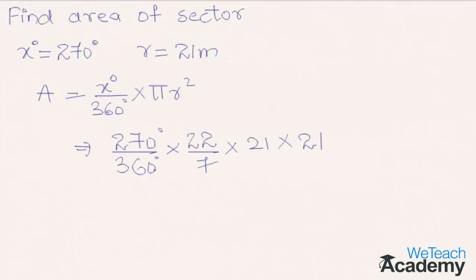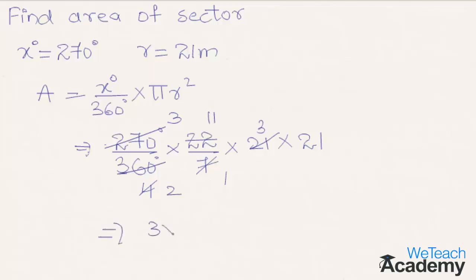Now let us simplify this. Here, 90 times 3 is 270 and 90 times 4 is 360. Then 7 times 1 is 7 and 7 times 3 is 21. And 2 times 2 is 4 and 2 times 11 is 22. So we get the terms in the numerator as 3 into 11 into 3 into 21, divided by the denominator 2.